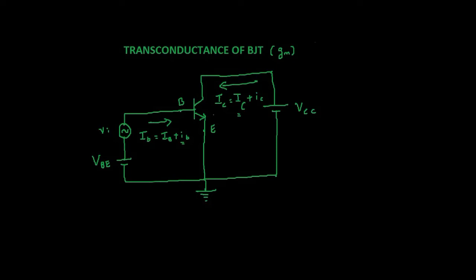We have a circuit here — this is a common emitter circuit, a generic one. It has input VBE which is a DC voltage, and another input VI which is a small signal voltage. These two voltages give rise to two different types of currents: a DC bias current IB and a small signal current ib due to small signal voltage VI. The sum of these currents goes into the base of the NPN transistor. The collector current IC is also the sum of DC current plus small signal current IC.